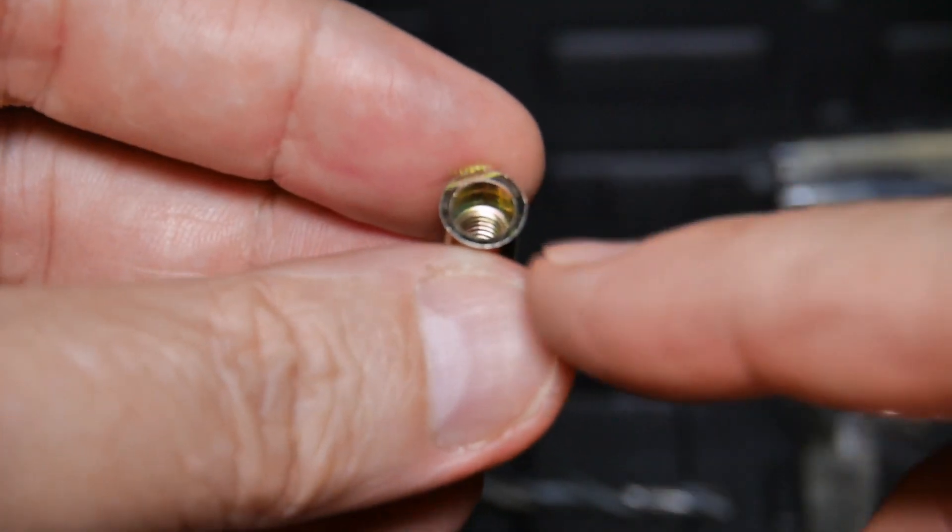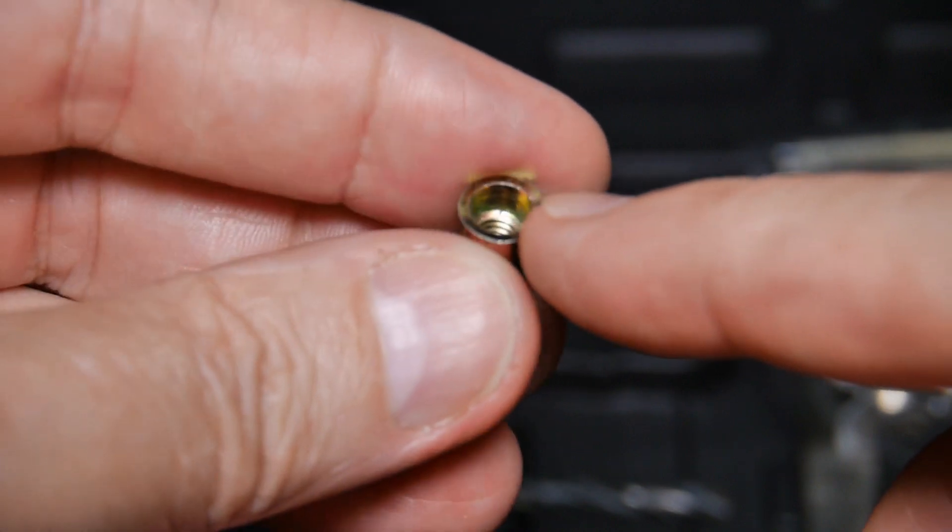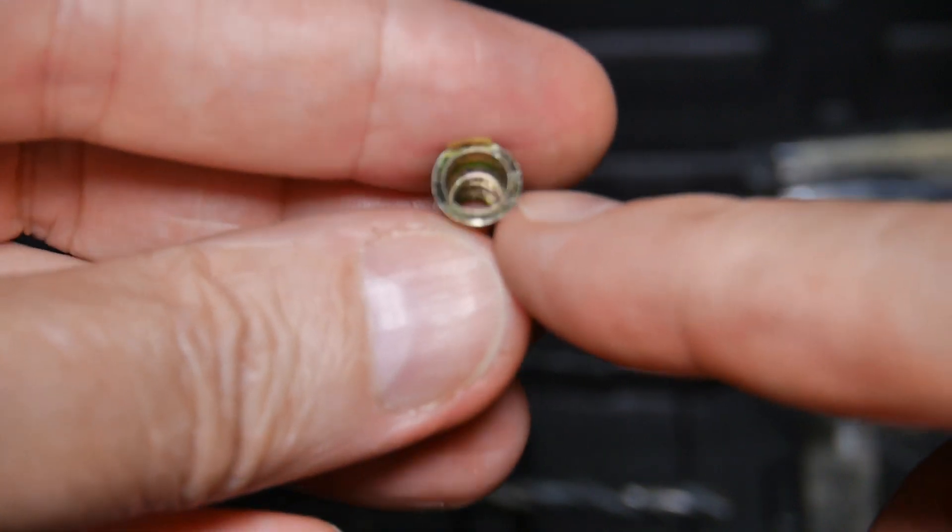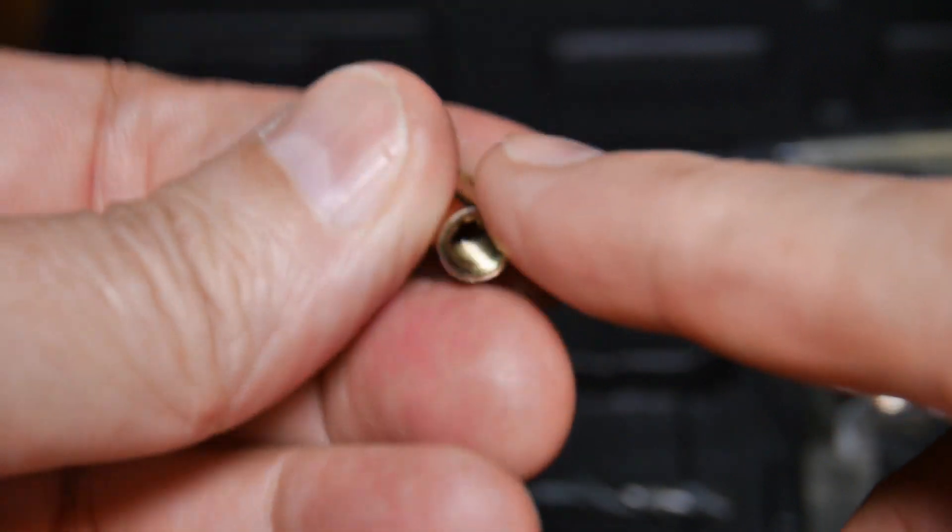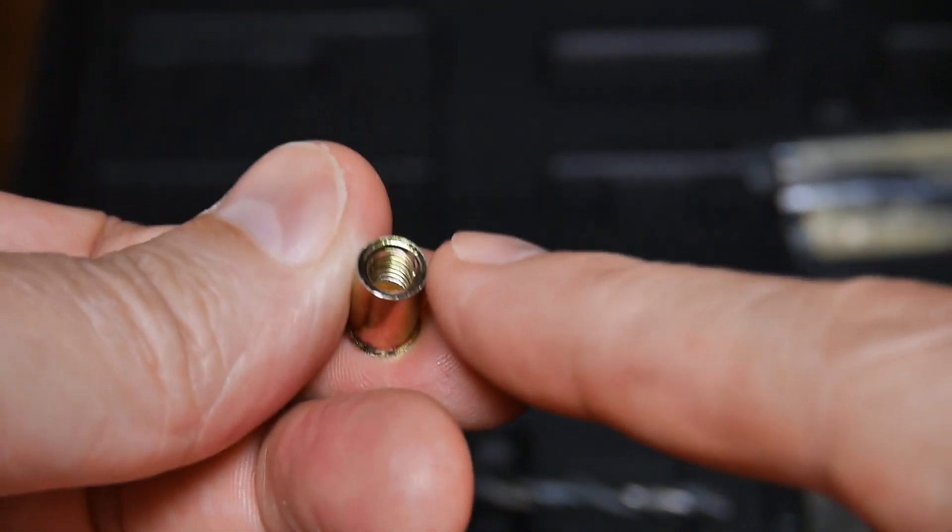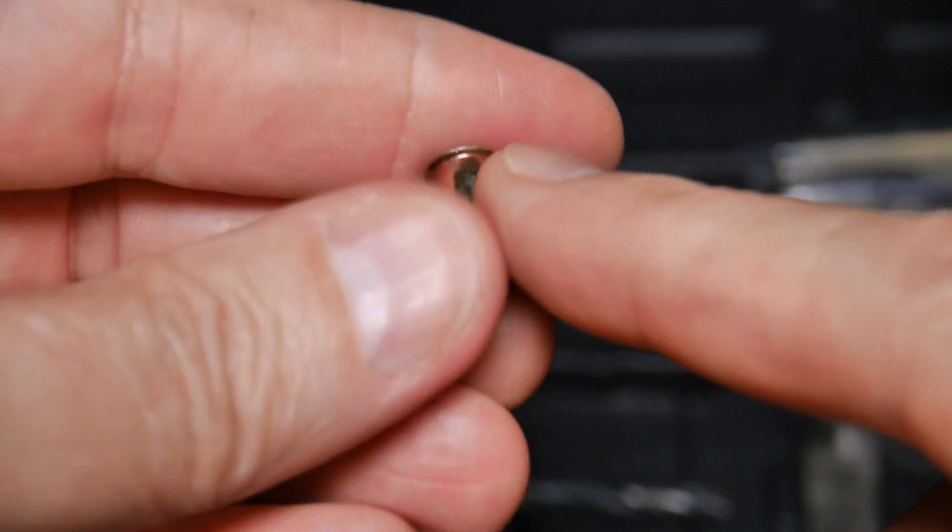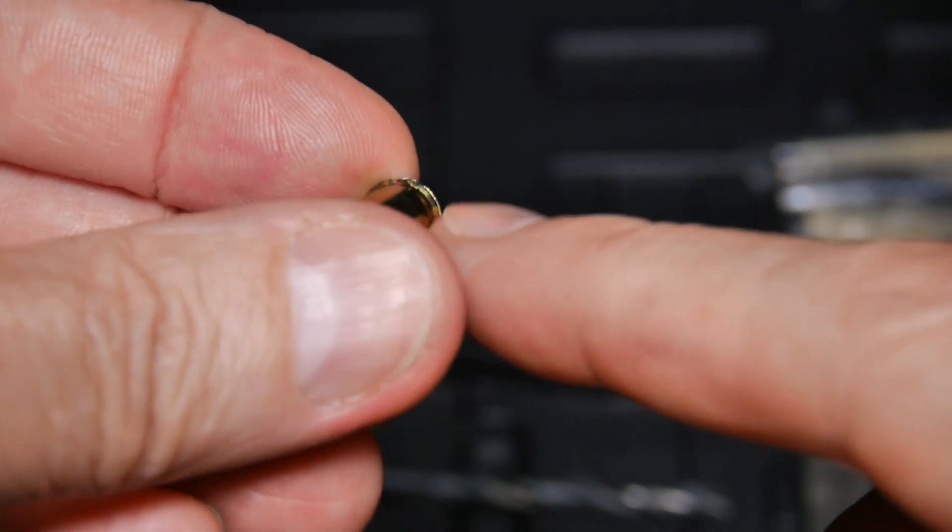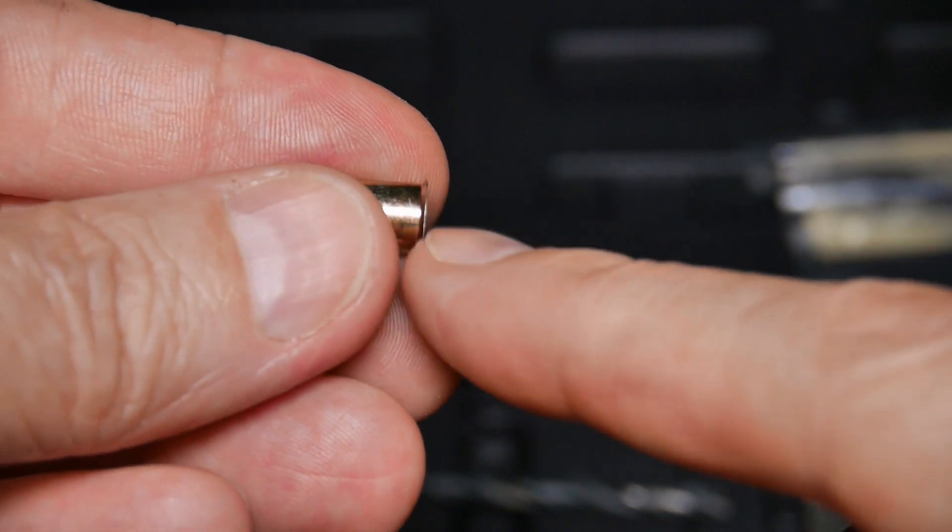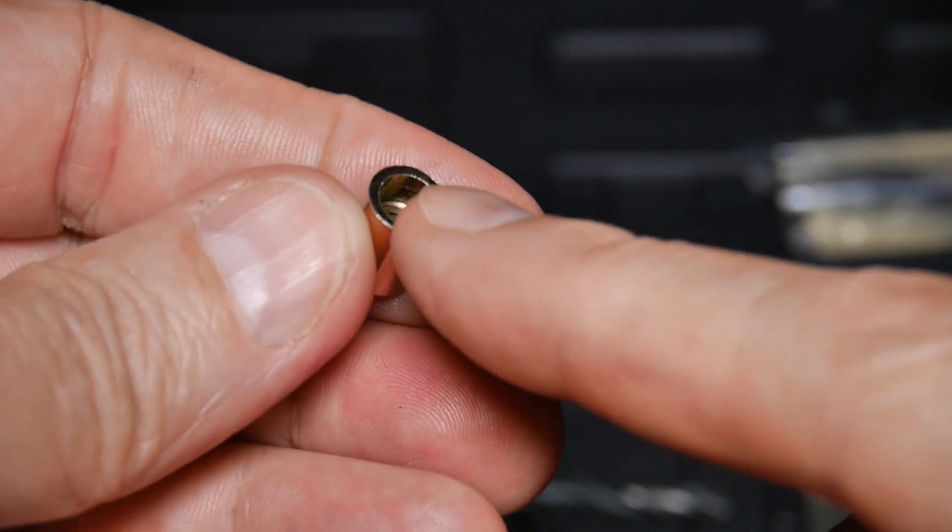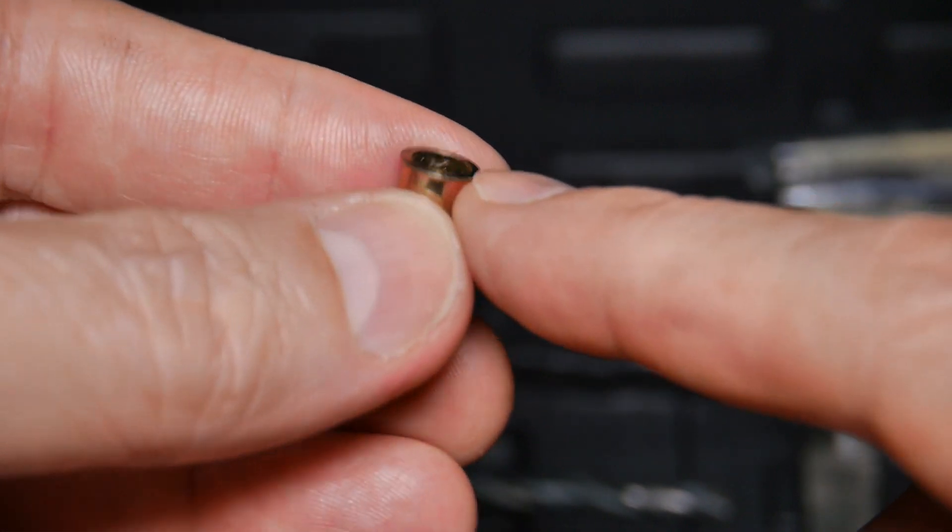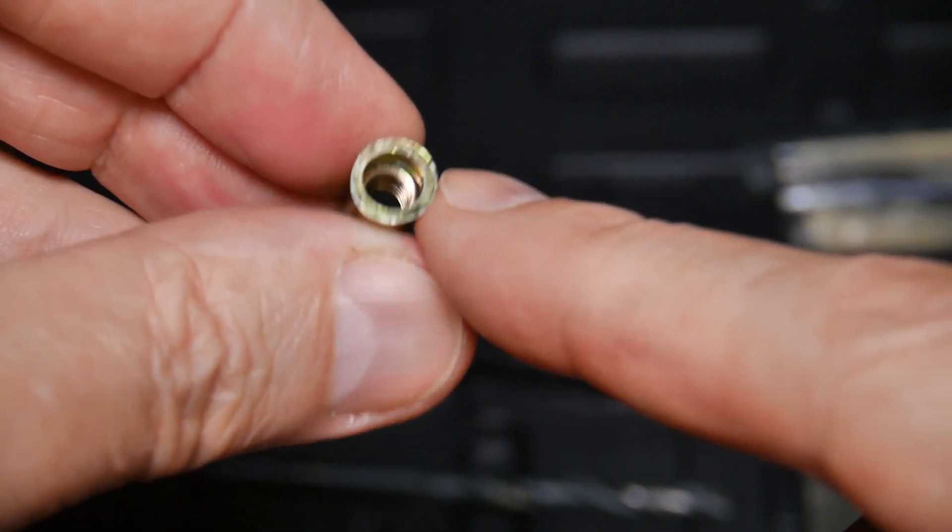This is the insert. You can see this upper part of it is not threaded and that's the thin part. That's the part that will get crushed and form the collar. And then at the bottom part are the threads. This is beveled. That upper piece is beveled. So if you bevel the hole, you put it in, you set this thing in here and squeeze it, it will basically be a flush mounted thread port.